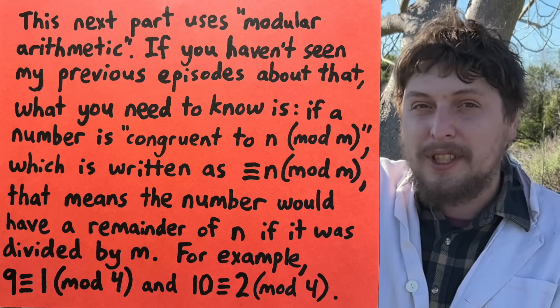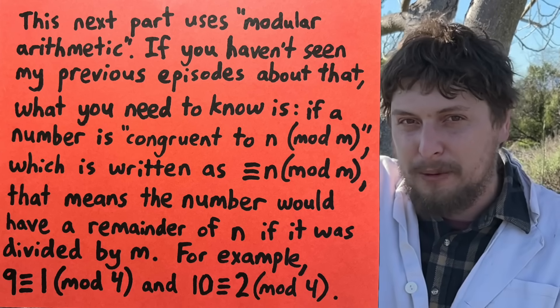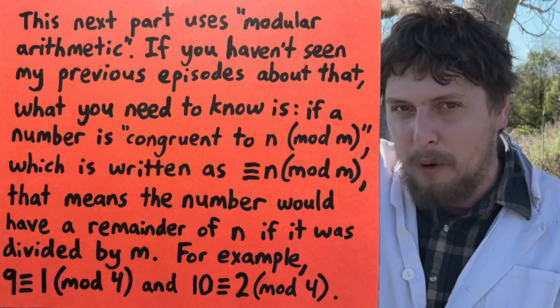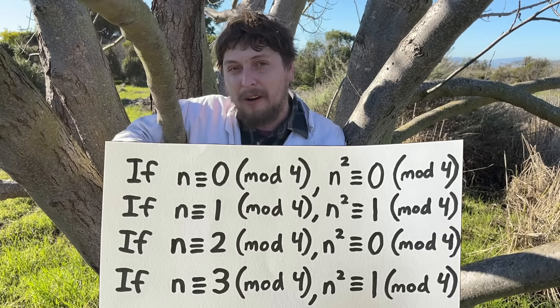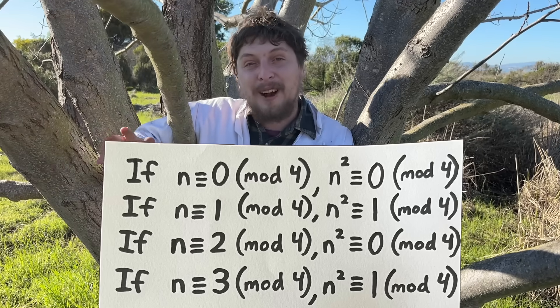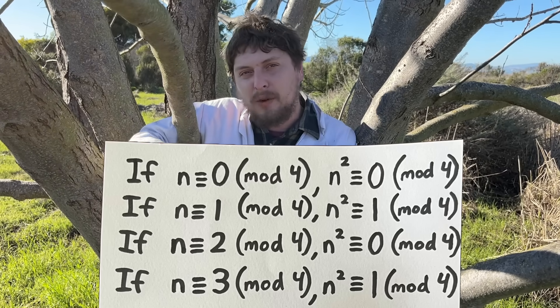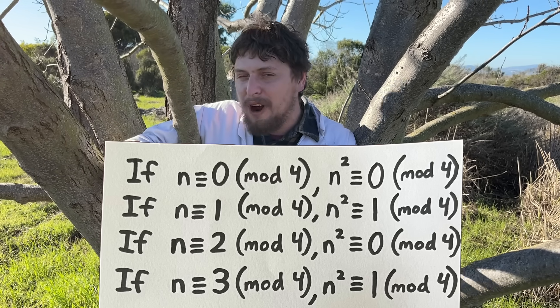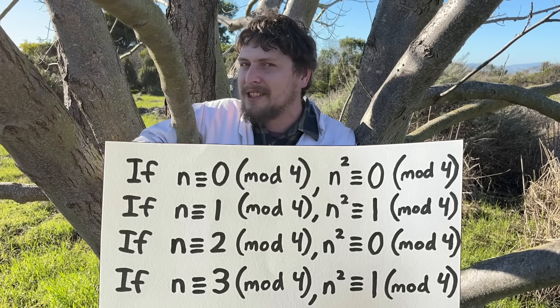For example, numbers that are one more than a multiple of four are congruent to one mod four. And if we look at what happens when we square a number of any of these possibilities, any of these possible values when squared either end up congruent to zero or one in this mod.